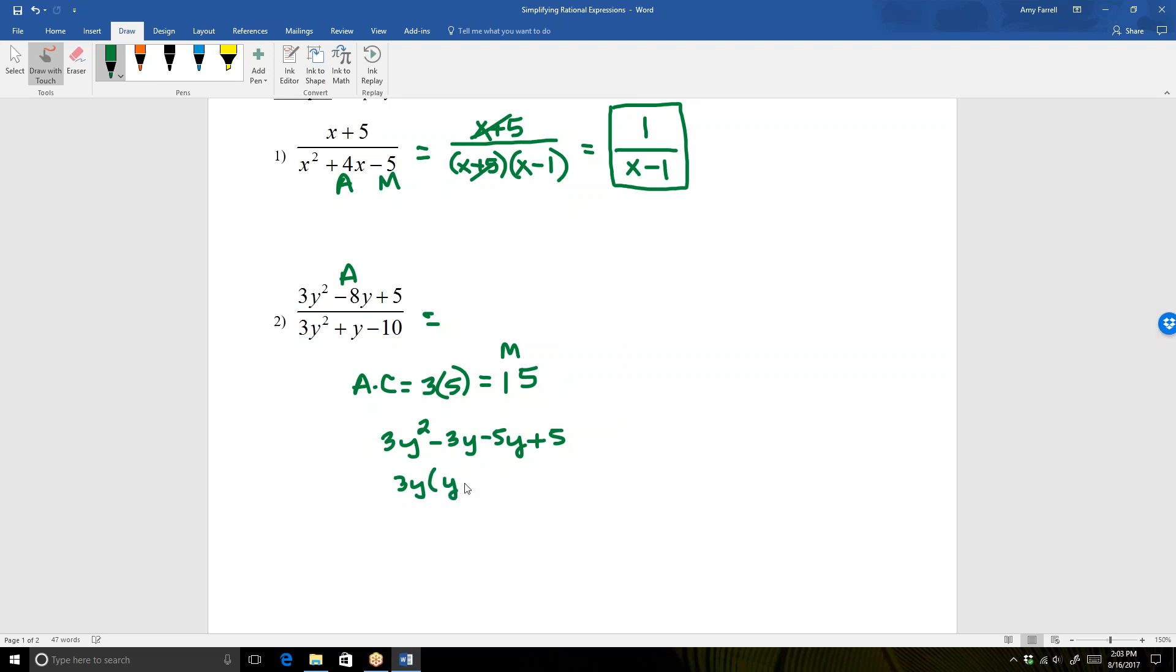This now allows me to factor by grouping. So I can factor out a GCF of 3y from the first two terms. And I can factor out a GCF of negative 5 from terms 3 and 4. Now notice that I did have a positive 5, but when I factor a negative 5 from a positive 5, it does change it to minus 1. Therefore, my numerator can be factored as 3y minus 5 times the quantity y minus 1.